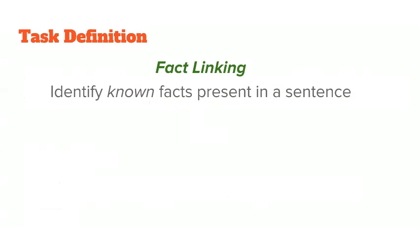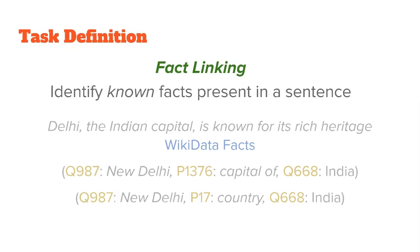The task of fact linking aims to identify known facts that are present in a sentence. For example, given the sentence 'Delhi, the Indian capital, is known for its rich heritage,' the following Wikidata facts are present in it: New Delhi, capital of India, and New Delhi, country India.